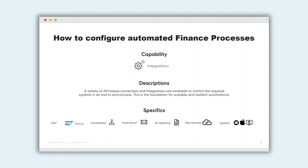Thanks for watching. We've had a quick look at the typical requirements of finance processes and what it takes to automate them, as well as the architecture of the Redwood platform that allows you to do so. Please make sure to also watch the following videos in this series to get a better impression of the product itself, including a product demonstration and further explanations of how this works. Thanks for your attention.